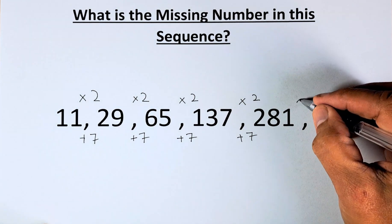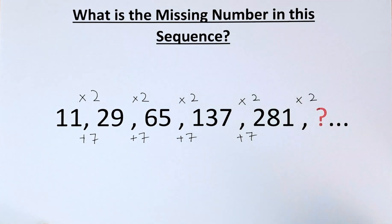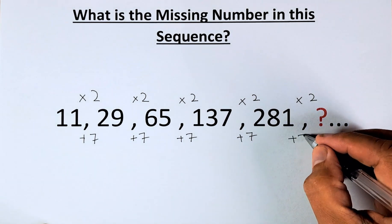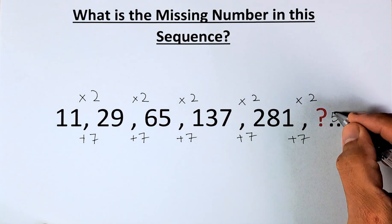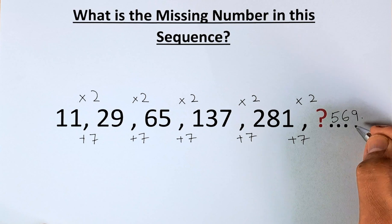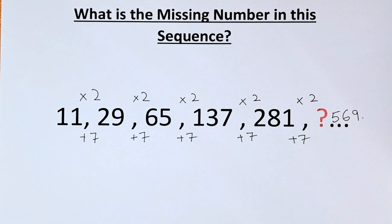And last but not least, we are going to multiply 281 by 2. That will give you 562. And when you add 7, the answer is going to be 569. So the answer for the question mark is 569.